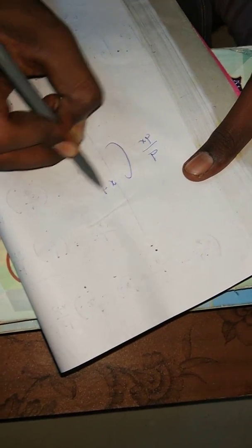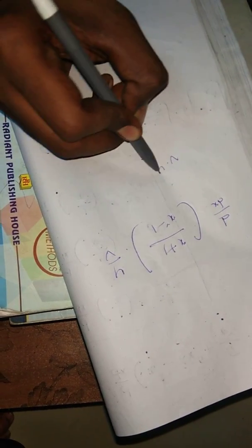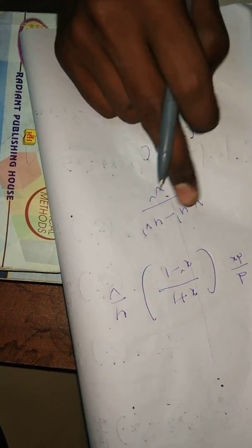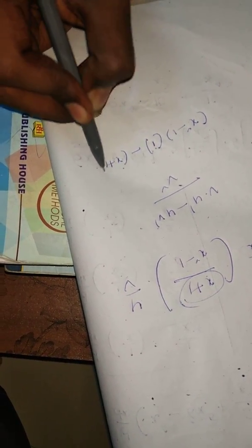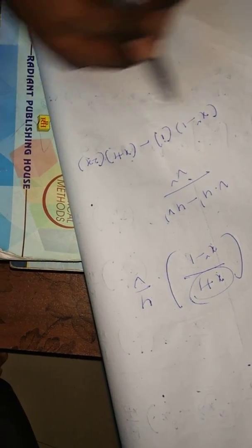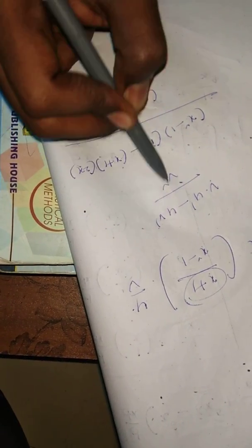Now the quotient rule (u/v rule): d/dx of (x+1)/(x²−1). Formula: (v·u' − u·v') / v². Here u = x+1, so u' = 1 (since x differentiates to 1 and the constant to 0). v = x²−1, so v' = 2x. Therefore the result is [(x²−1)·1 − (x+1)·2x] / (x²−1)².